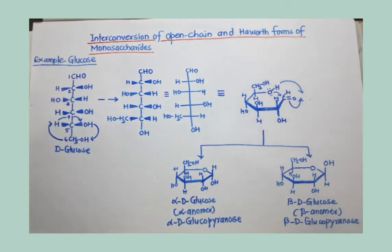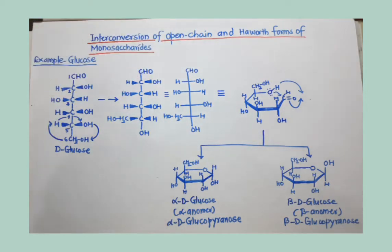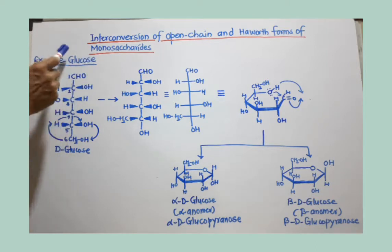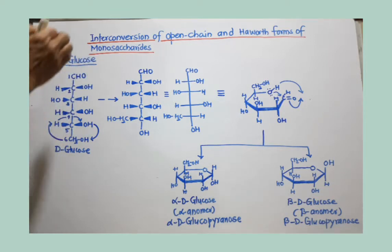Now we will see how to convert the open-chain form of a monosaccharide into a cyclic monosaccharide, which is also called the Haworth form of a monosaccharide. To understand this conversion, we will consider one example: glucose.